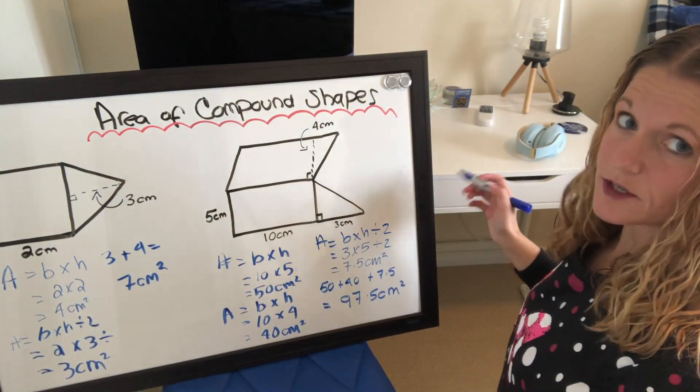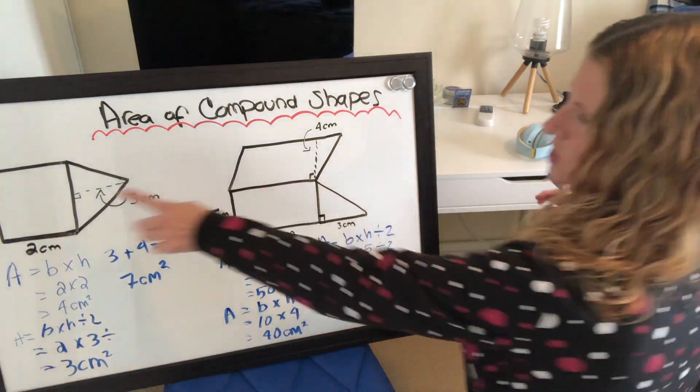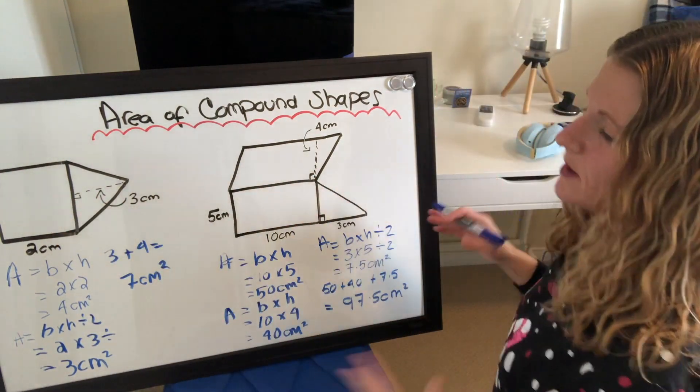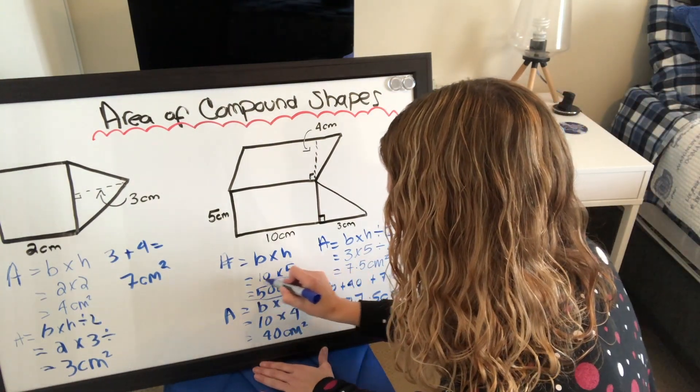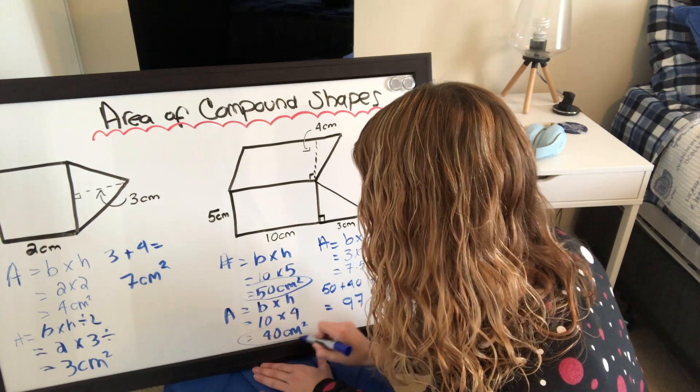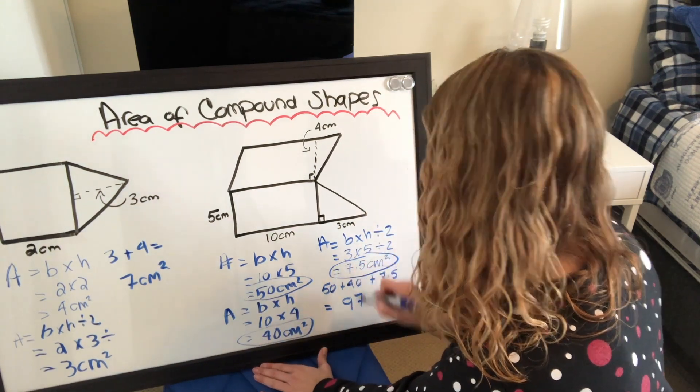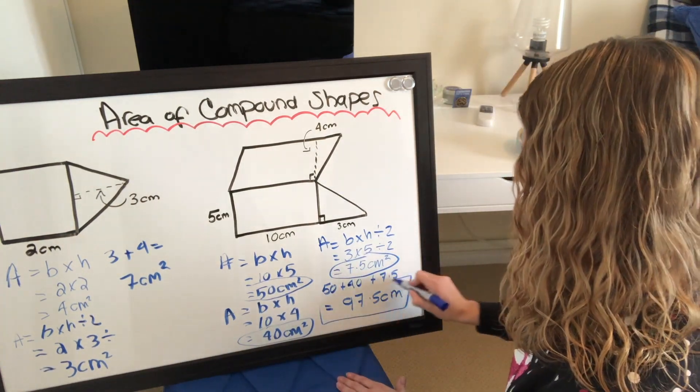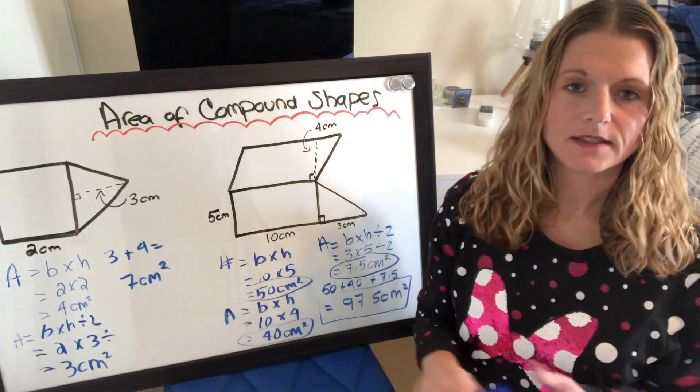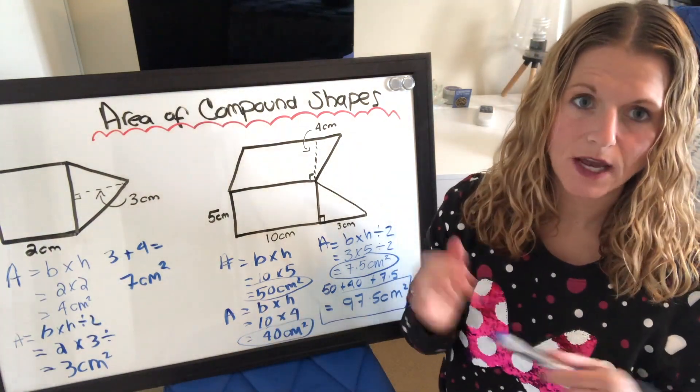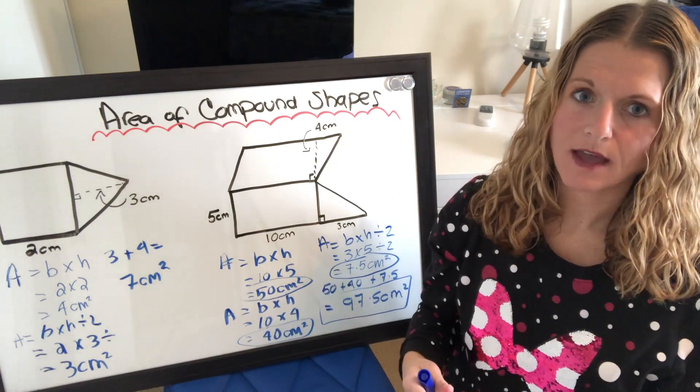So all you have to do just to review is find the area of each shape. You could number them. You could label them just so you don't get confused. Then you're going to take the areas of all the shapes that you did and then add them up. So this would be your answer. That's it. That's how easy it is, guys. So area of composite shapes, all you're doing is calculating the area of each shape and then adding them up together.